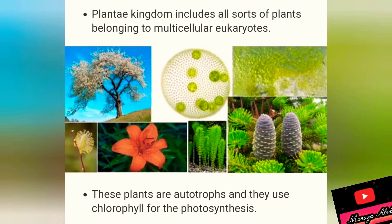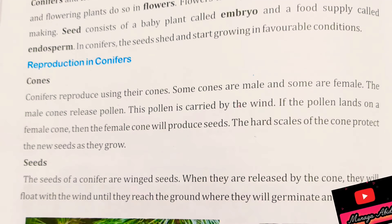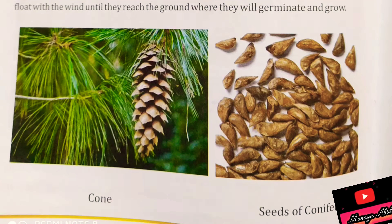Plants are of many types. They are algae, fungi, ferns, angiosperms, and conifers. You all know that reproduction in plants is done by spores or seeds. Conifers are the plants that reproduce by seeds.